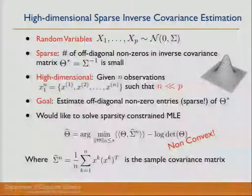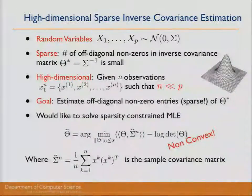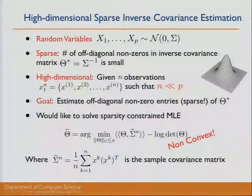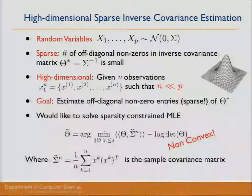What do we mean by high dimensional sparse inverse covariance estimation? Assume that we have p random variables, x1 through xp, distributed according to some zero mean Gaussian distribution parameterized by a covariance matrix sigma. Further, suppose that the inverse covariance matrix associated with this distribution is sparse — meaning the number of off-diagonal non-zeros is small.